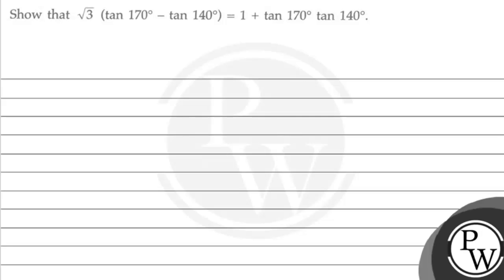Hello! Let's see the question. The question says show that √3 (tan 170° - tan 140°) is equal to 1 plus tan 170° tan 140°. Okay, so the key concept for this question is...